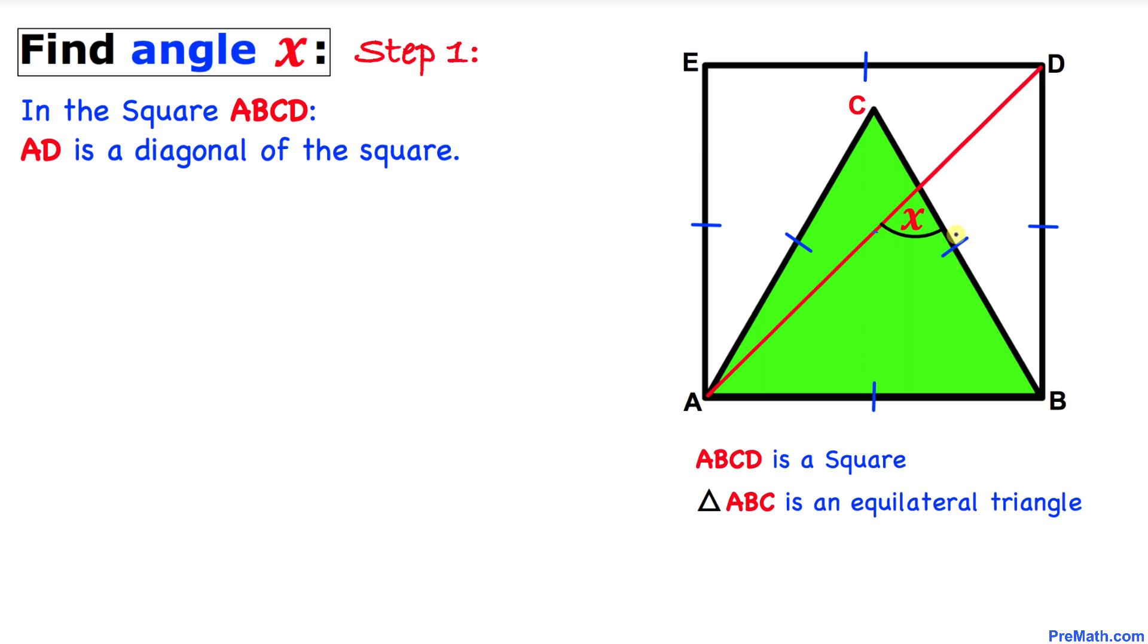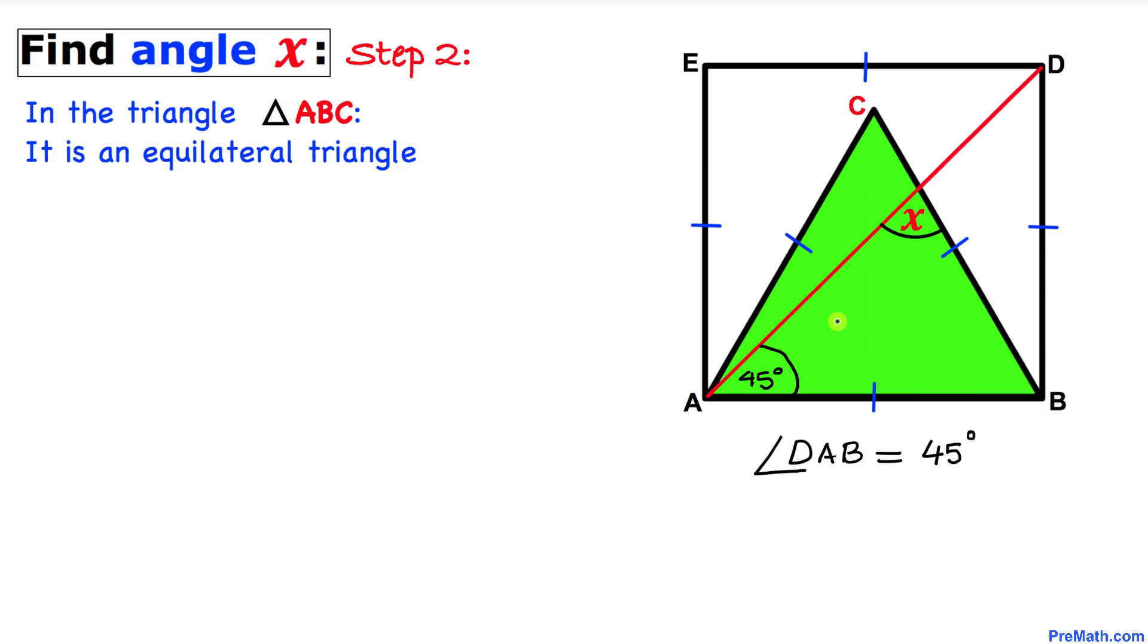Let's focus on this square ABCD. We can see that AD is the diagonal of this square. These two angles are equal, and this is our 90 degree angle. We know that the sum of the angles are 180 degrees in a triangle, so if this is 90 degrees, these both angles have got to be 45 degrees each. Therefore, this angle DAB is 45 degrees.